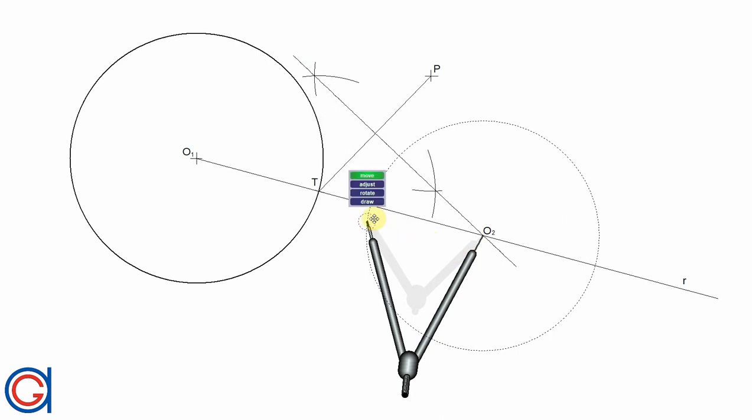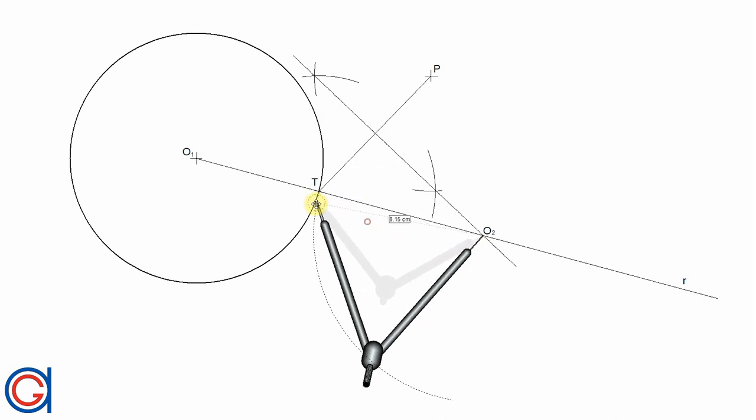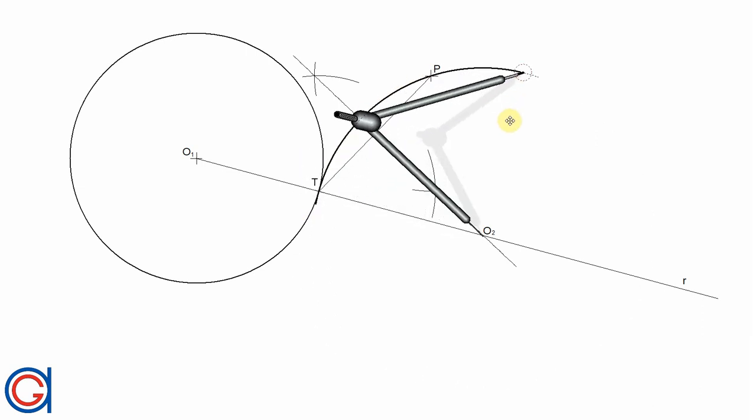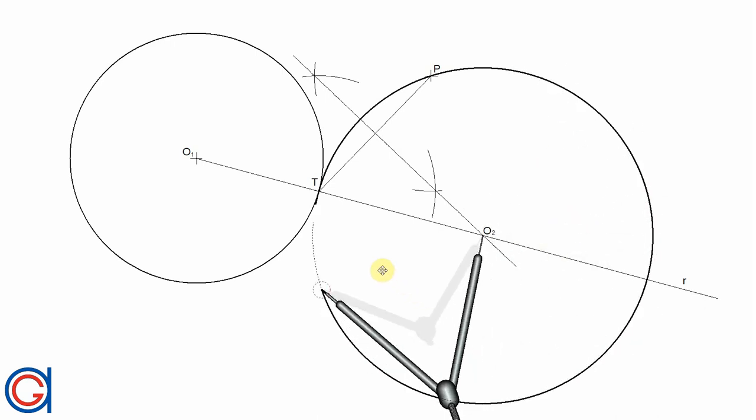So now finally setting our compass on the center point O2 and with a radius O2T or O2P in a thicker line, we are going to draw the tangent circle that we are looking to draw.